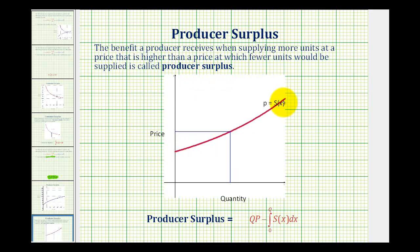Looking at this red supply function, if a producer was willing to supply a certain amount of items at a lower price, but they actually sold the items at a higher price, it makes sense there's going to be a benefit to the producer. And we can measure this benefit by determining the producer's surplus.